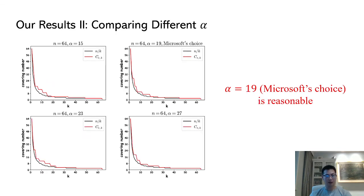Similarly, in terms of 64-bit CPU, we have also selected four different rotation numbers: 15, 19, 23, and 27. We can see Microsoft's choice 19 performs reasonably well for all k.